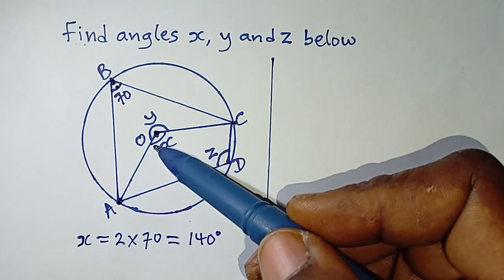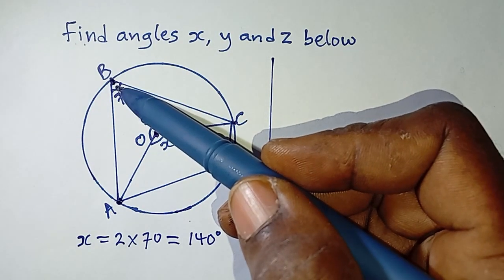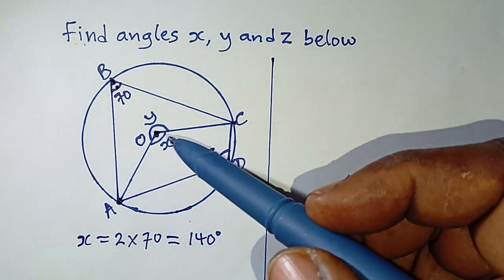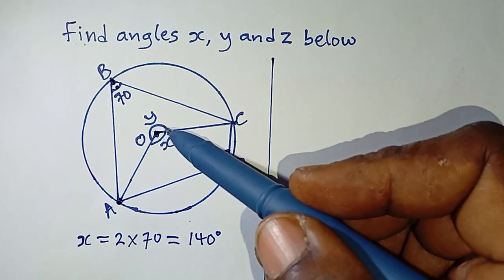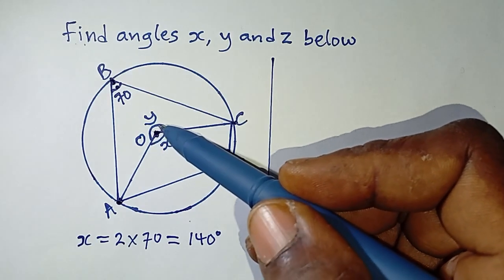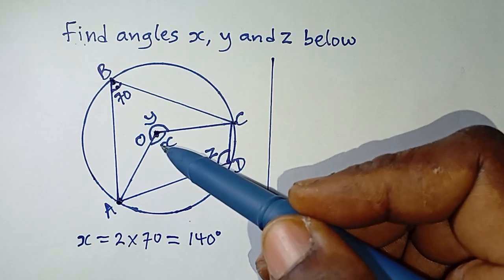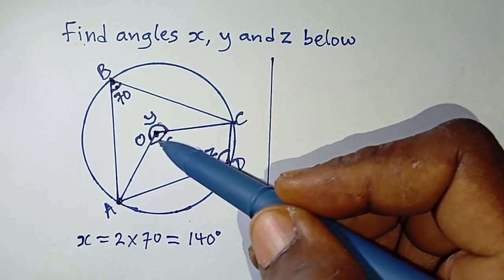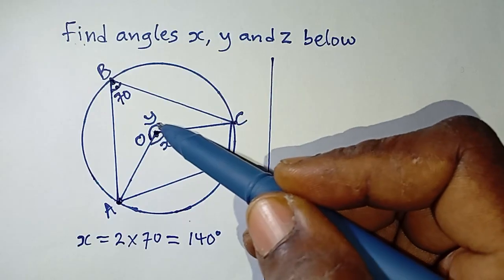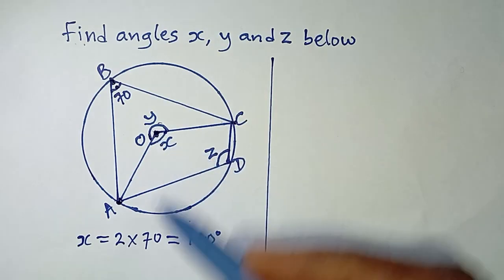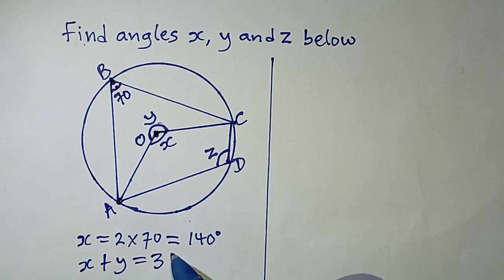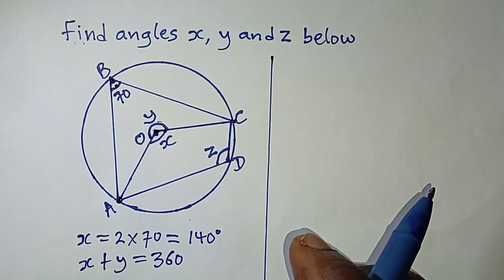The angle at the center is twice that at the circumference. Now to obtain y, there's another rule we can apply: the sum of angles at a point is equal to 360 degrees. The angles x and y together form a full angle at a point, like forming a complete circle, so x plus y is equal to 360 degrees.